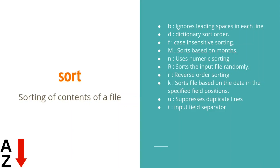To recap: -b ignores leading spaces in each line; -d is for dictionary sort order; -f is for case-insensitive sorting; capital -M sorts based on months; -n uses numeric sorting for numbers; capital -R is for random sorting and lowercase -r for reverse order. -k specifies column and character positions, and can be combined with -t to specify a field separator. -u gives you the unique lines from the file. Go ahead and try it out — thanks for watching, see you in the next lecture.